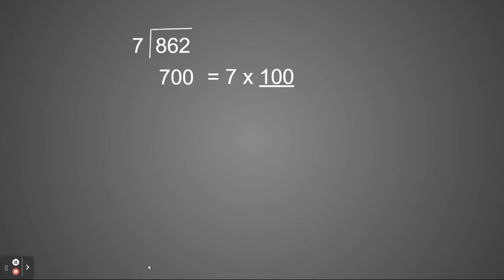I'm going to place 700 directly below 862, making sure I'm lining them up in the ones, tens, and hundreds place. Then I'm going to take away the 700 from 862. When I do that, I will have a total of 162 left. What I basically just did is I took 700 and set them into one group. Now I have 162.